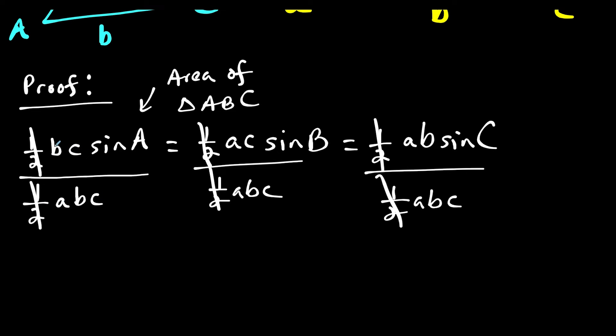But now on the first term, we have B over B canceling, C over C canceling, and we're left with sine A over A. And notice here, A over A cancels, C over C cancels, leaving us with sine B over B.